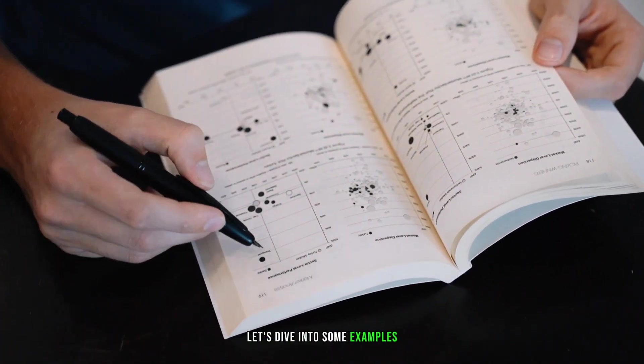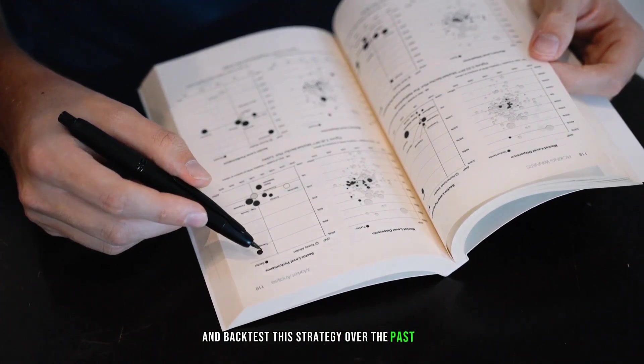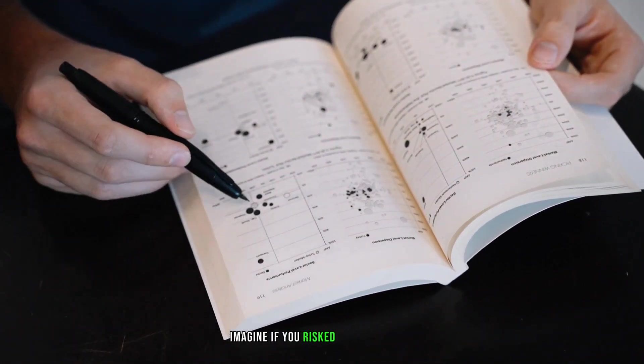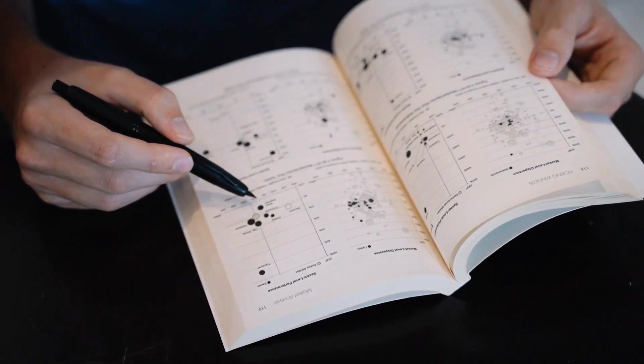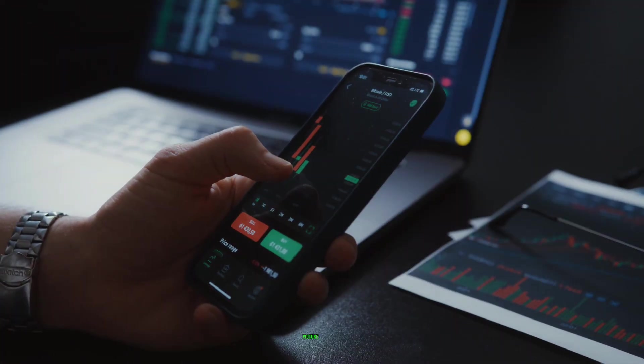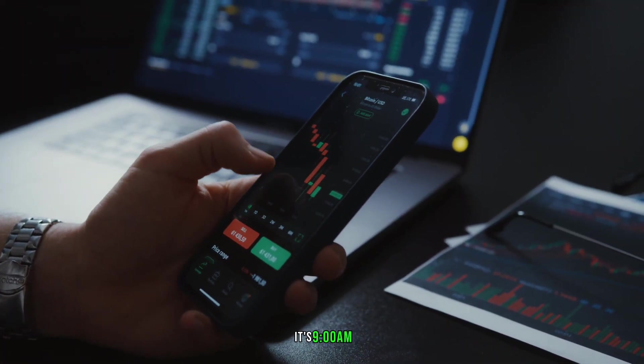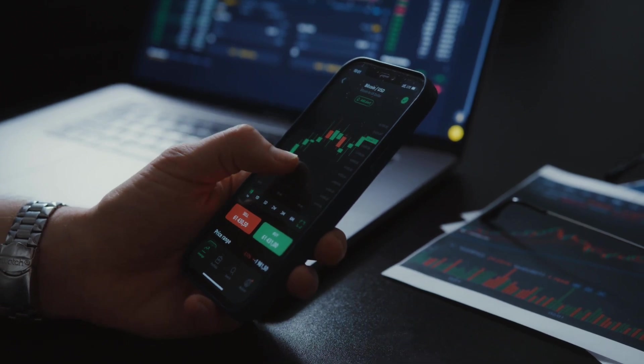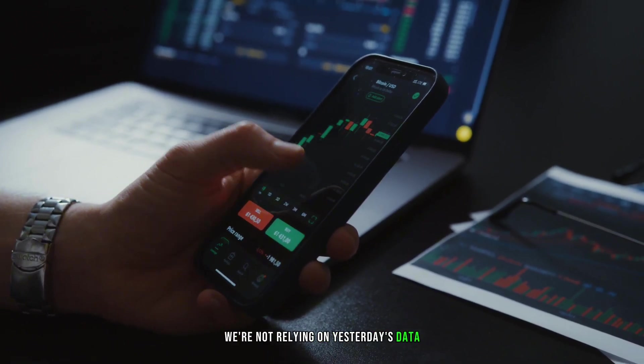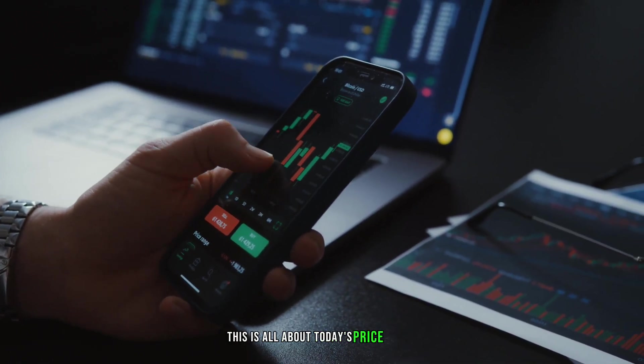Let's dive into some examples and back test this strategy over the past week. Imagine if you risked $500 per trade. Let's see how this could have played out. Picture this: It's 9:30 a.m. and the market is just waking up. We're not relying on yesterday's data. This is all about today's price action.